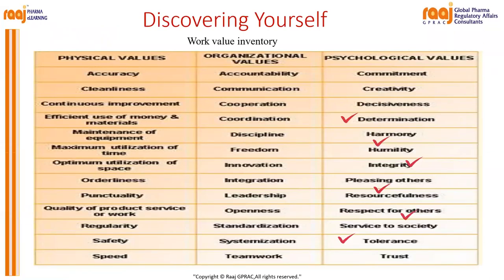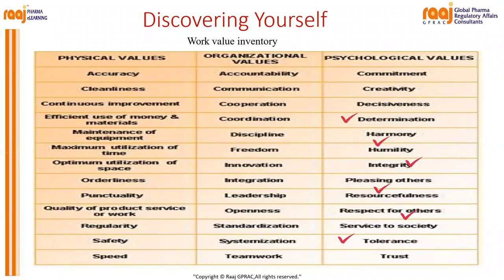While discovering yourself, consider the value inventory across three areas. Physical values include accuracy, cleanliness, continuous improvement, efficient use of money and materials, and maintenance of equipment. Organizational values include accountability, communication, cooperation, coordination, discipline, freedom, and innovation. Psychological values include commitment, creativity, decisiveness, determination, harmony, humility, integrity, pleasing others, resourcefulness, and respect for others — along with tolerance.